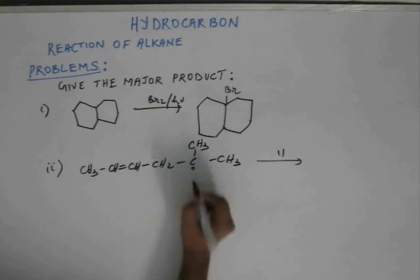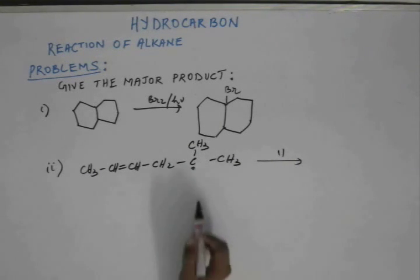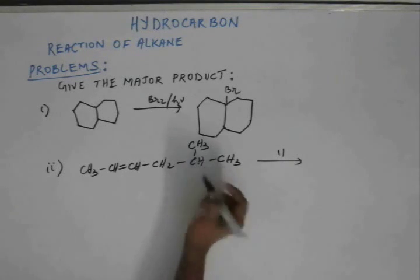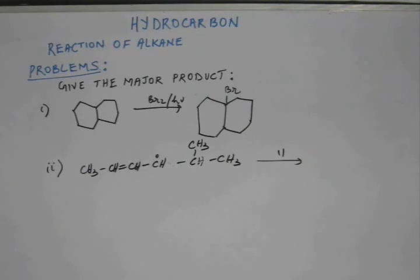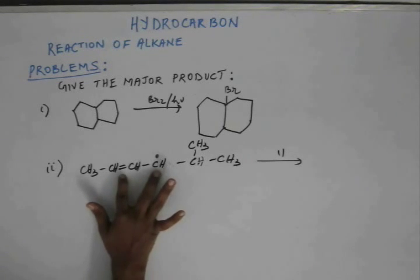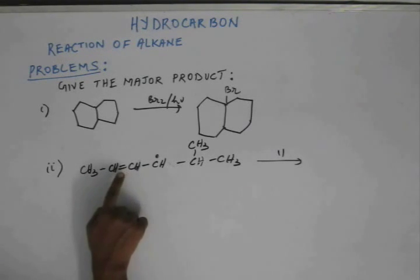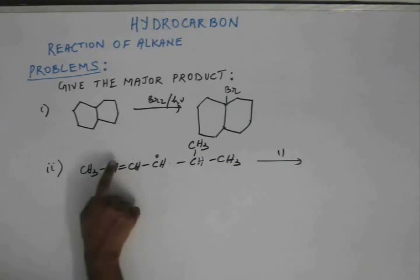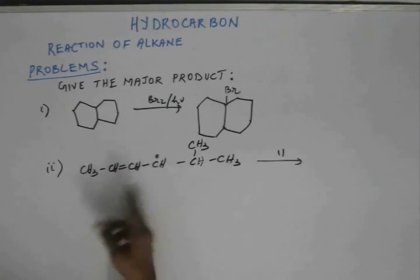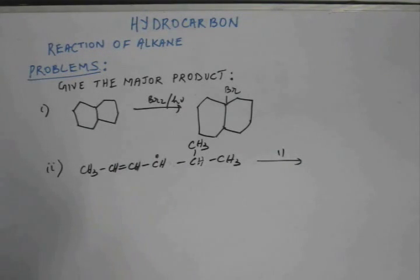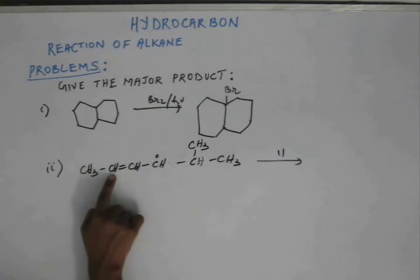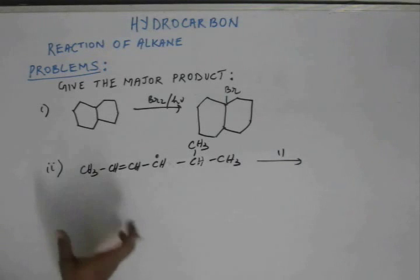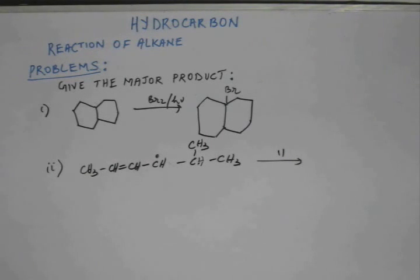If you remove hydrogen from the tertiary carbon, the free radical has hyperconjugation from three sides. But if you remove hydrogen from the adjacent carbon next to the pi bond, a free radical forms on that carbon, which is in conjugation with the pi bond. That free radical can resonate with the pi bond — the free radical shifts and the pi bond shifts — resulting in delocalization over two carbons, plus hyperconjugation from adjacent C–H bonds.